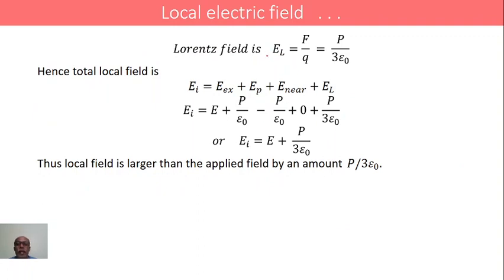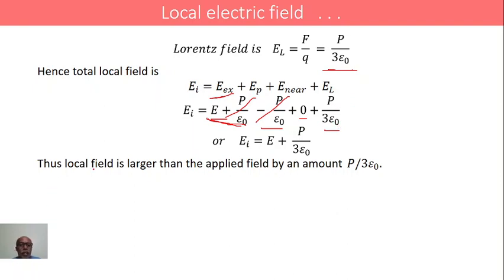Now coming to the Lorentz field EL, which equals F by Q. Therefore EL equals P by 3ε₀. This is the Lorentz field. Therefore, the local field or internal field EI is the summation of all the fields acting on it. Adding Ex, Ep, Enear, and EL: Ex and Ep cancel each other, and the internal field simplifies to E plus P by 3ε₀. Thus, the local field or internal field is greater than the applied field by an amount P by 3ε₀.